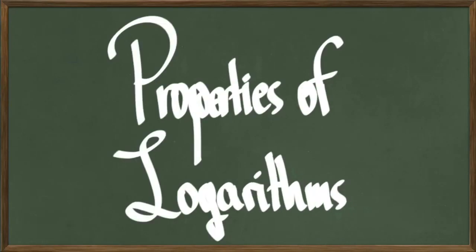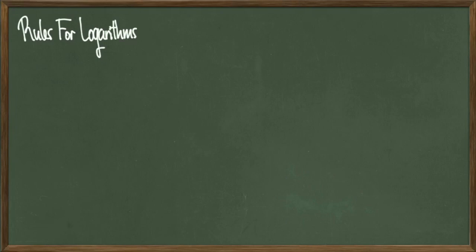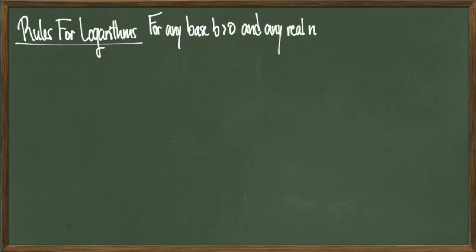Hey everyone, today we're going to be talking about properties of logarithms. To start off, we're going to consider any base b that is a positive number, not equal to 1, and any real numbers x and y. Now we're going to list all the properties that we'll be using in this video in a chart below, and each property will be given a name.